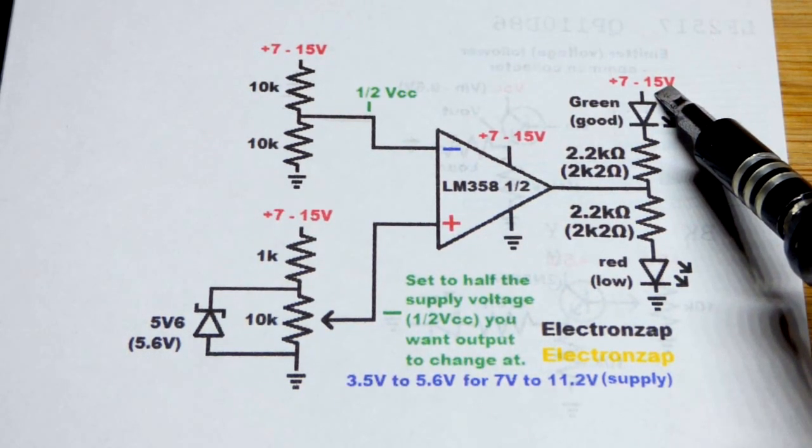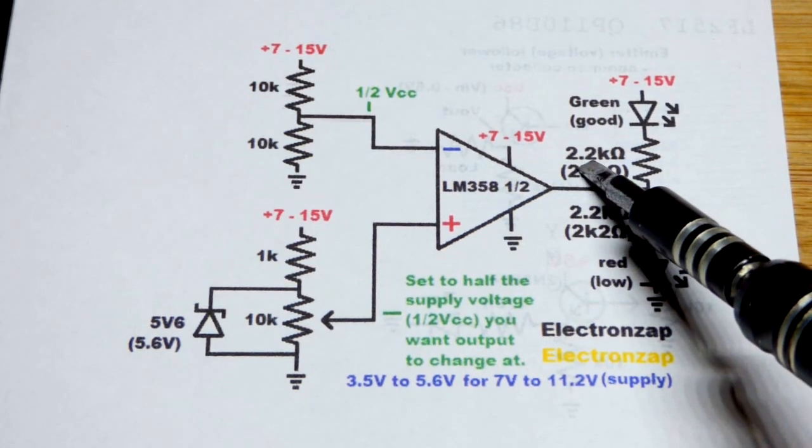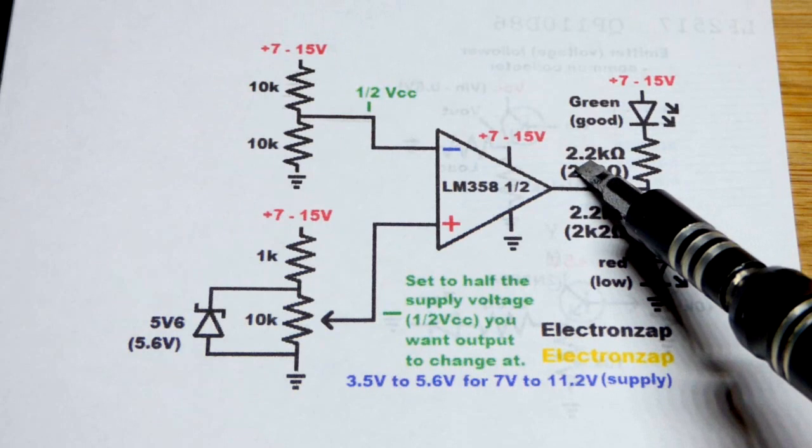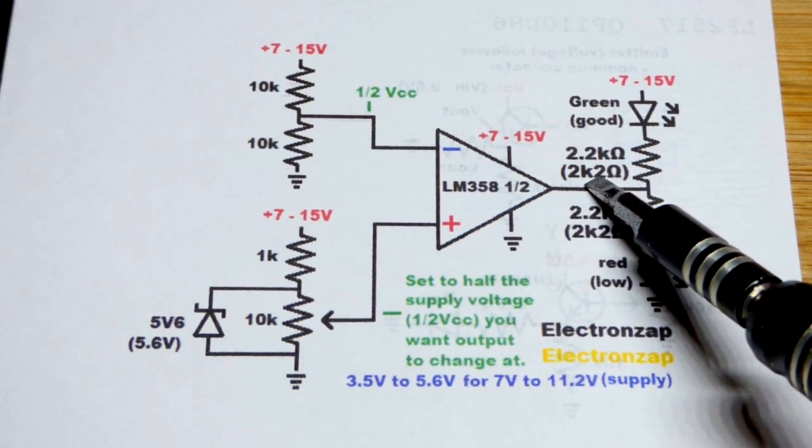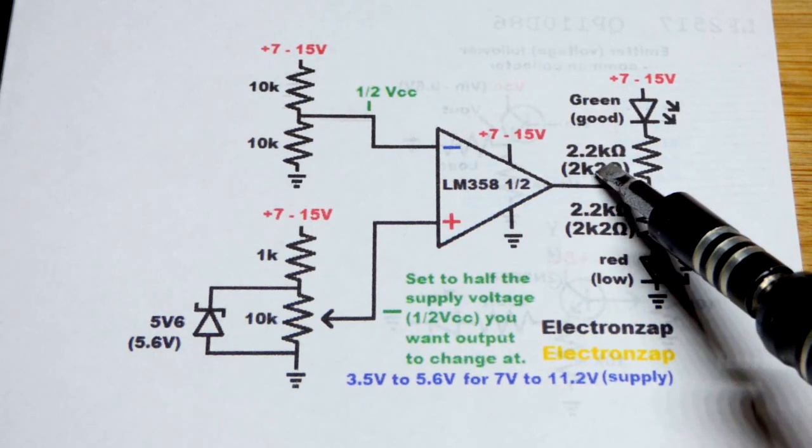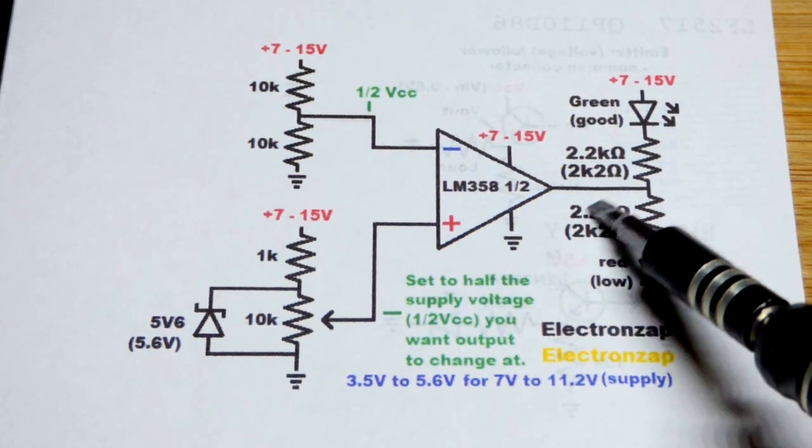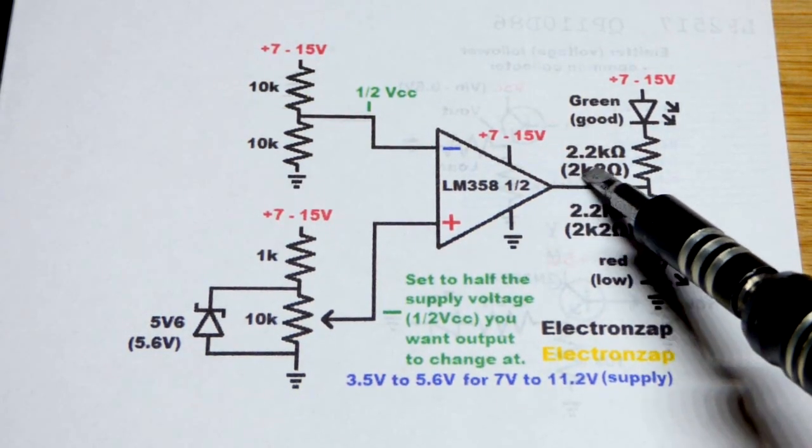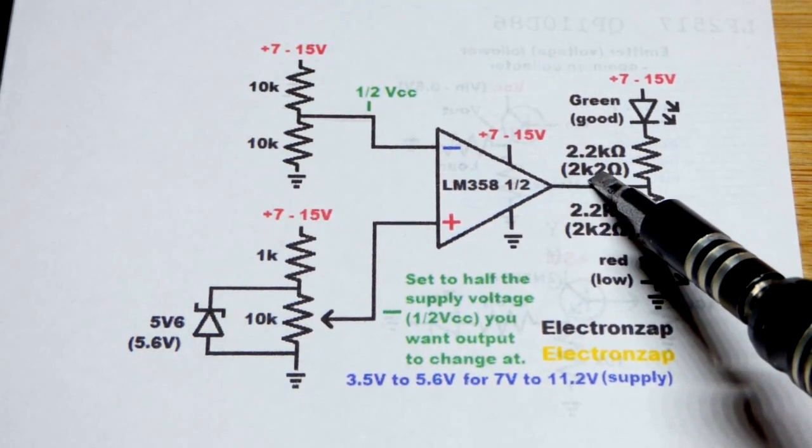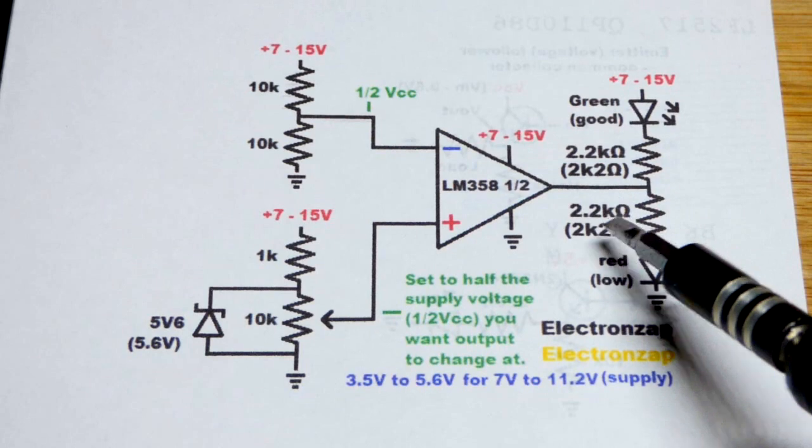Since we have maybe 15 volts we're working with, we're going to protect our LEDs with 2.2 kilo ohm, 2200 ohm resistors. Sometimes you may not see the decimal point, so they take the k for kilo ohms and swap it with the decimal point. If you see 2k2 and an ohm symbol, that means 2.2k.